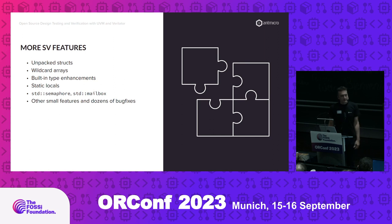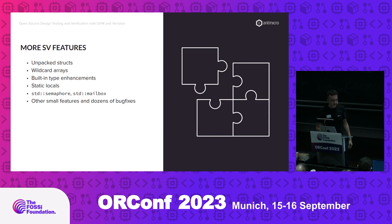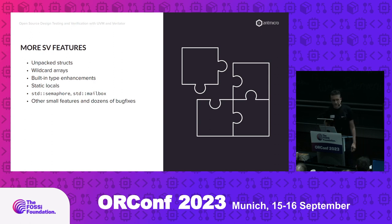We also did a bunch of smaller features: unpacked structs, wildcard arrays — those are arrays that let you use any type as a key, like associative arrays. We did a bunch of enhancements on built-in types like arrays, with missing methods like find added. We added support for static local variables, which is a bit surprising it wasn't there, and we added the semaphore and mailbox classes from SystemVerilog, plus a bunch of other fixes.